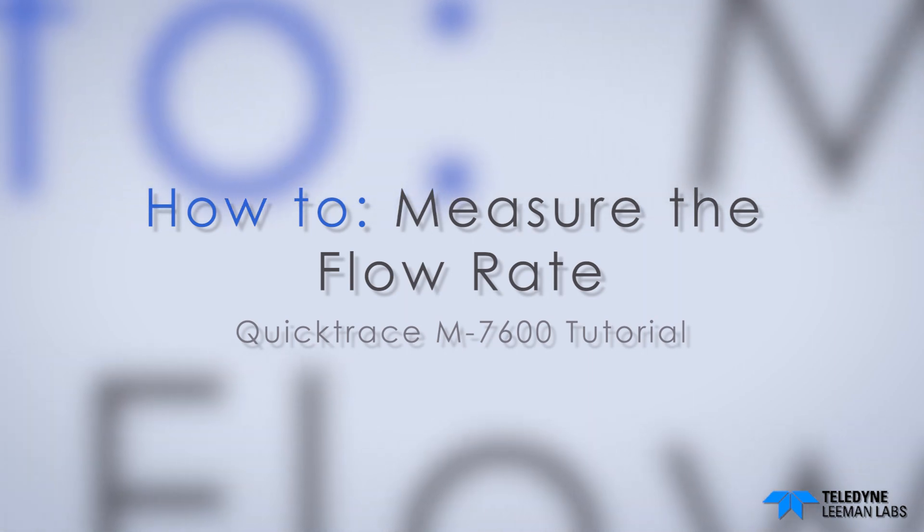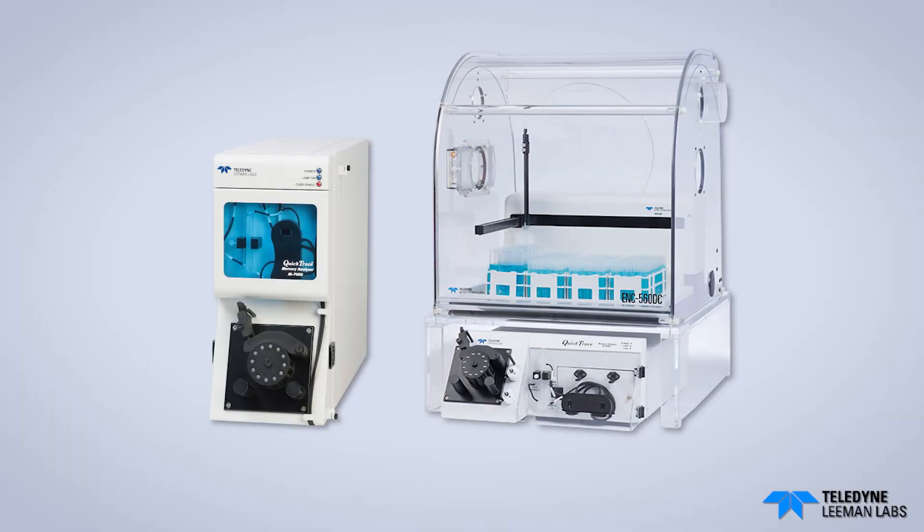Today we are going to learn how to calculate the flow rate for Teledyne Lehman Labs QuickTrace products. We will calculate the uptake gravimetrically using DI water. Since the density of water is approximately 1 gram per milliliter, the weight and the volume of the sample is equivalent.